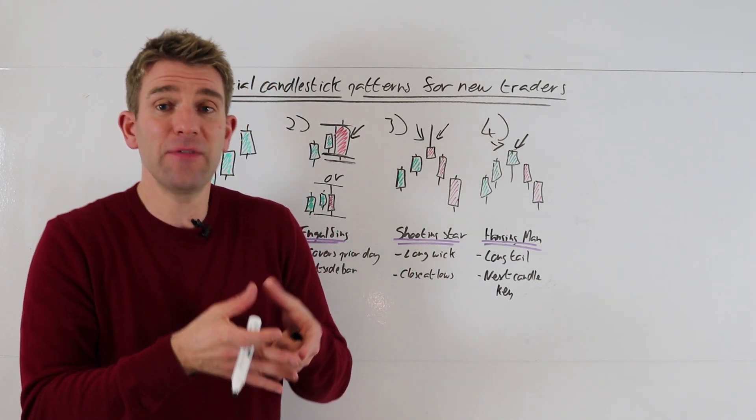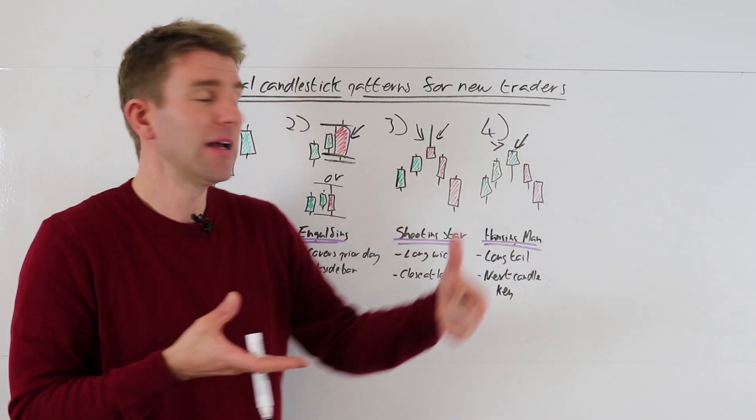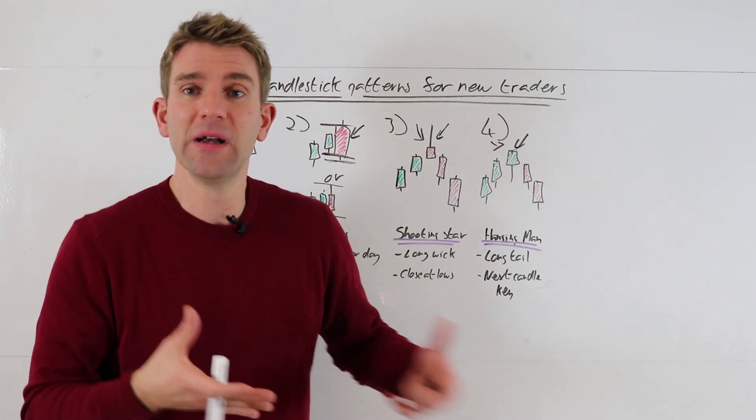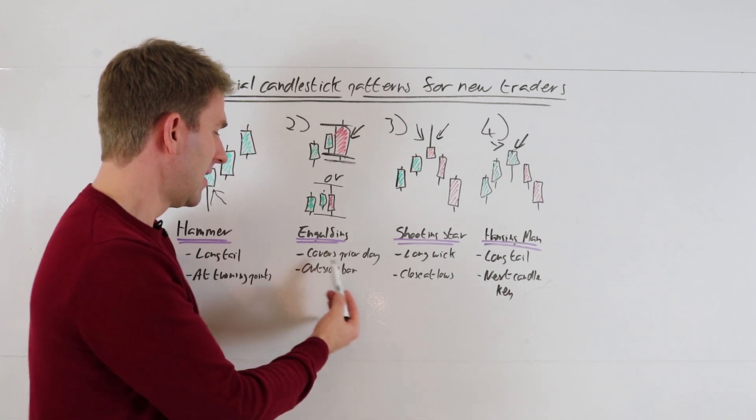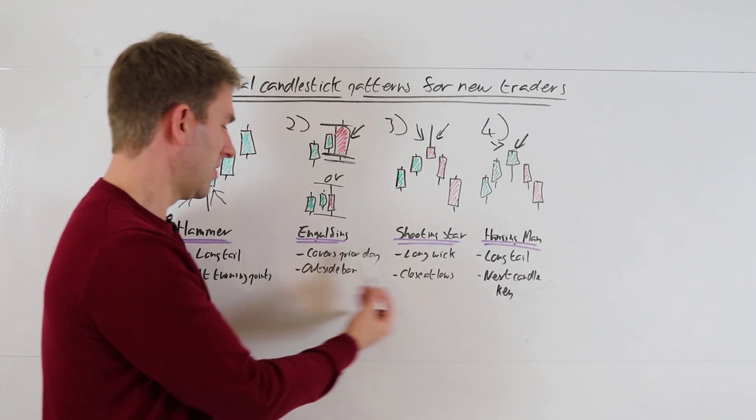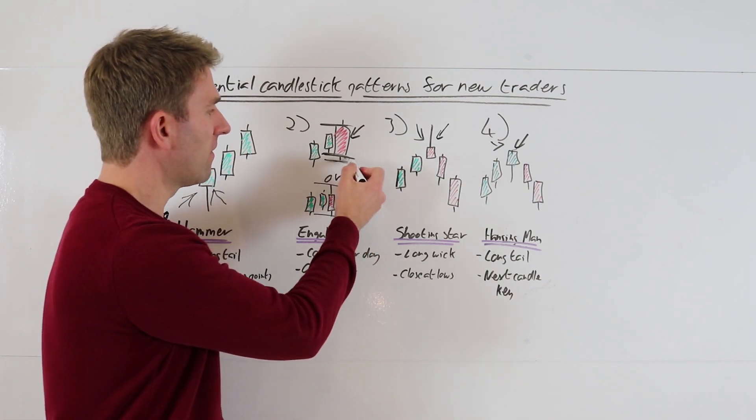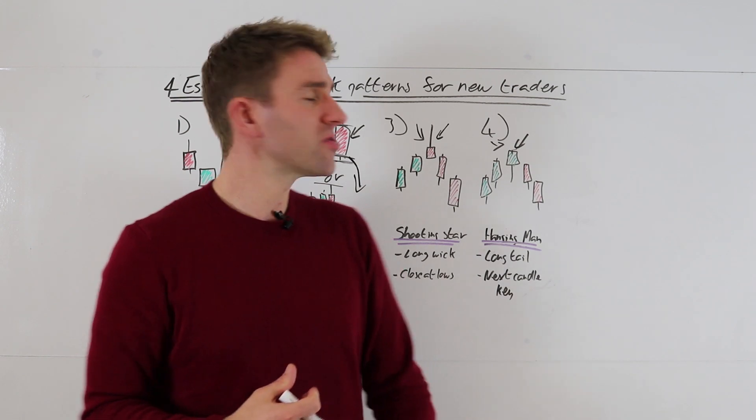Traditionally, bearish engulfing would be closing below the prior day's low. But listen, in trading there are times when you can bend things a little bit if it's looking really good. If it's like a really big move up and it failed, and it's got a mixture maybe of an engulfing and a shooting star—we'll look at in a moment—then you've got to judge what it's telling you. We're looking for it to cover the prior day's action as an outside bar, and we're looking for follow-through the next day to the short side if it's bearish engulfing, to the long side if it's bullish engulfing.